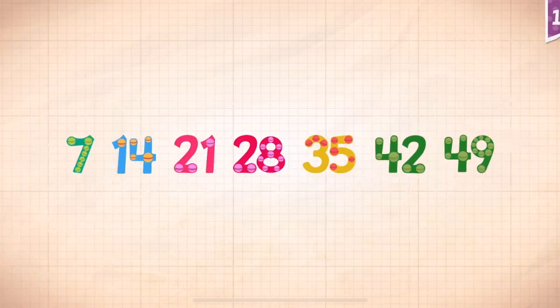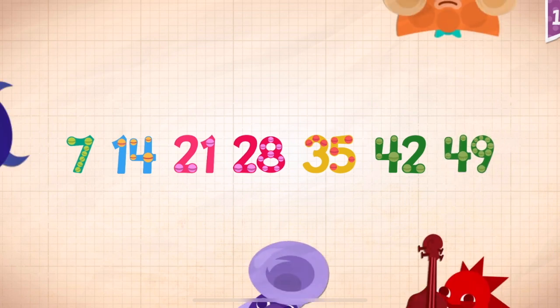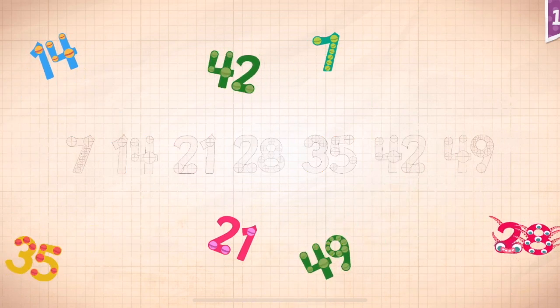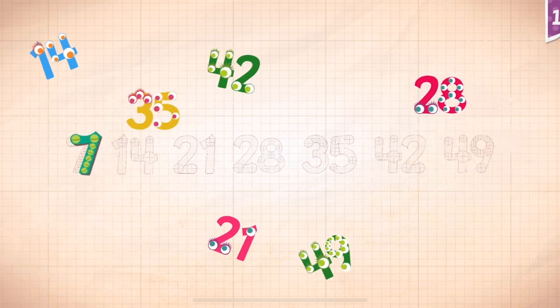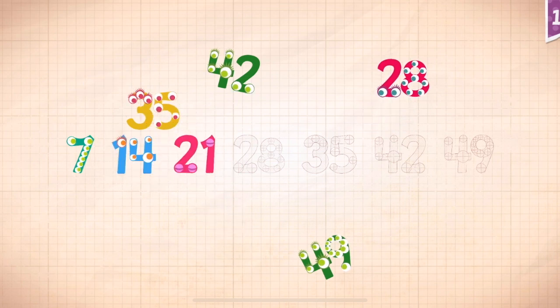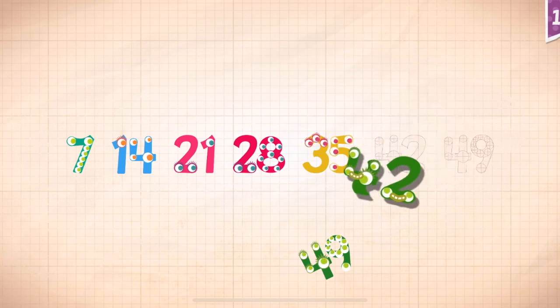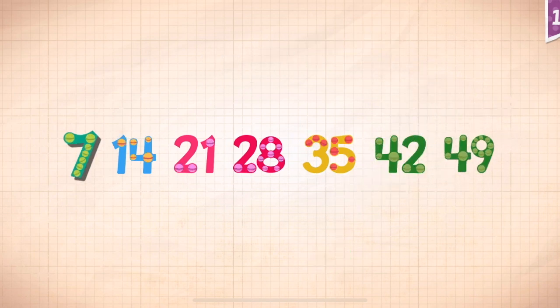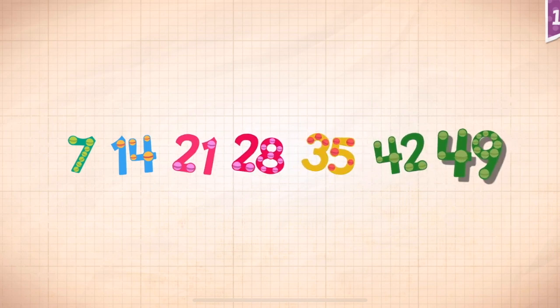Count by sevens. 7, 14, 21, 28, 35, 42, 49. 7, 14, 21, 28, 35, 42, 49.